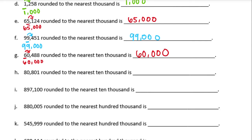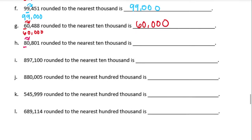80,801 rounded to the nearest ten thousand. The eight is in the ten thousands place. Next to it is a zero — that zero is four or lower — so the eight stays the same and everything else becomes zeros. It rounds to 80,000.